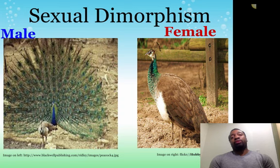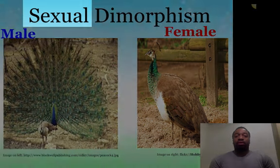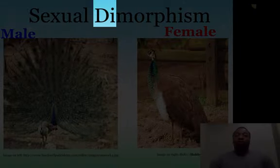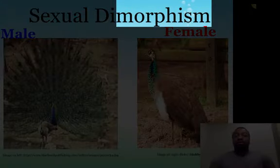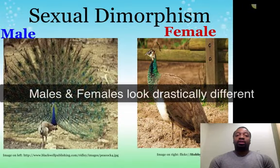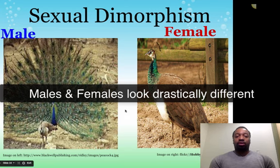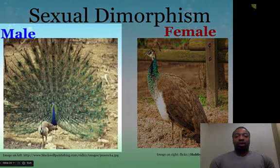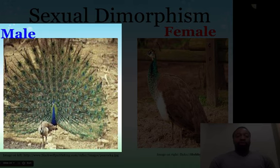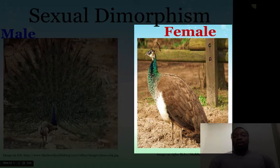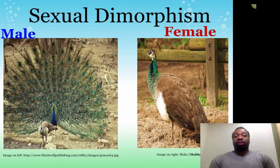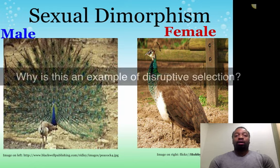Here's another example of disruptive selection: sexual dimorphism. 'Sexual' refers to the sex of the organism, 'di' means two, and 'morphism' refers to appearance or morphology. In sexual dimorphism, the two sexes of the same species look drastically different from each other. A classic example is the peacock — the males have elaborate, beautiful tail feathers, while the peahen, the female, does not have this elaborate coloration. They are dimorphic — they look different from each other.